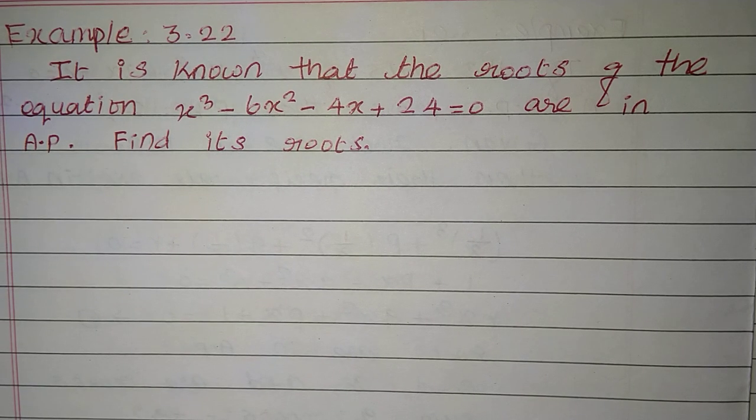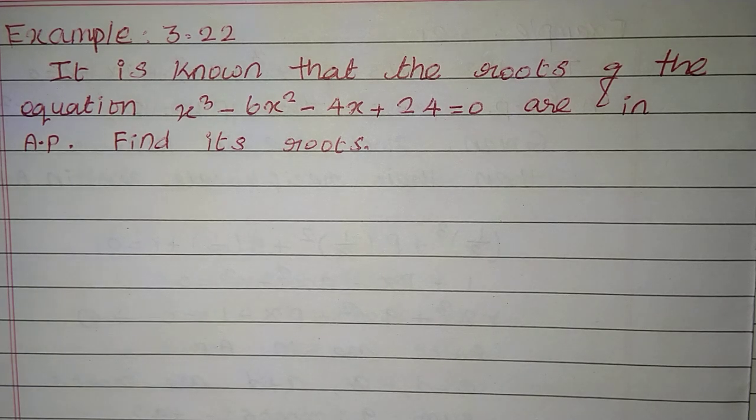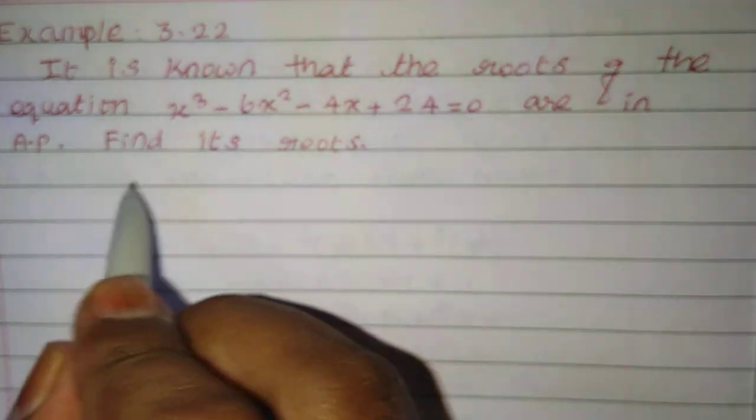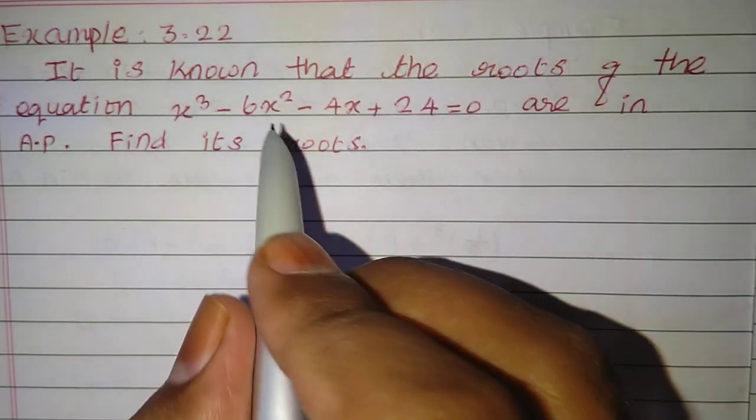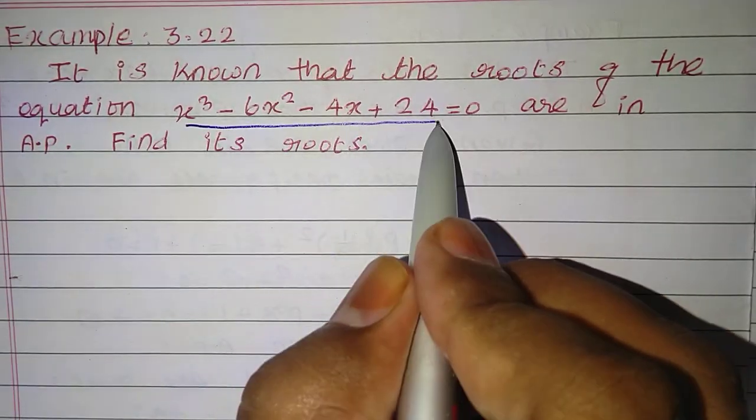Example 3.22. It is known that the roots of equation x cube minus 6x square minus 4x plus 24 equal to 0 are in AP. Find the roots of equation.